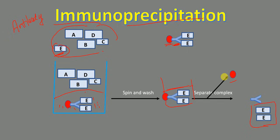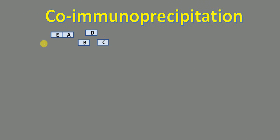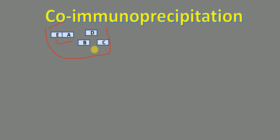Now moving on to co-immunoprecipitation. 'Co' means together. Let's say we have a solution containing different proteins, in which protein E and protein A are interacting and present as a complex, while other proteins are not interacting. Co-immunoprecipitation is used to detect protein-protein interactions.